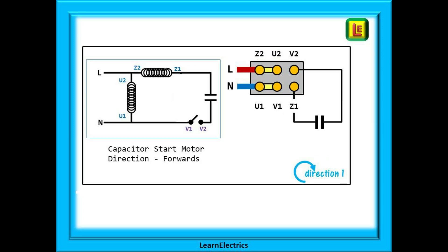A capacitor start motor is wired as shown here. Notice that the switch is now included in the circuit. When the motor reaches running speed the switch will open and disconnect the Z winding or start winding and the motor will continue to rotate just on the U or run winding. The capacitor is now connected between Z1 and V2 and you can see that the supply cables L and N are again in line with the links.